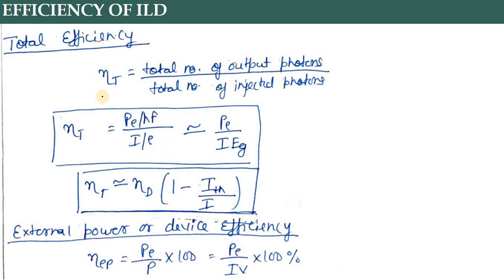Next term है ηtotal - total efficiency। यह है total number of output photons divided by total number of injected electrons। यहाँ पर differential नहीं है - यहाँ total number of photons है। कितने electrons inject किए और कितने photons मिले - overall, not differential।